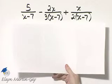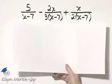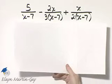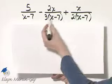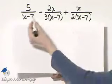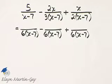Notice I've already factored the denominators, and looking at these three factored denominators, you can see that the LCD is 3 times 2, or 6, times x minus 7.